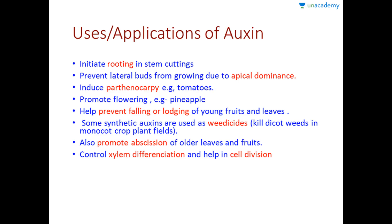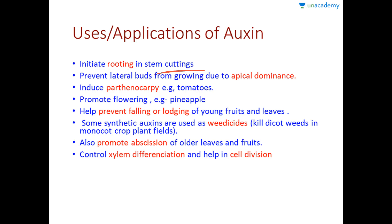The most important part is the uses and applications of auxin. First, auxin initiates rooting in stem cuttings. In horticulture and floriculture, when we want to grow plants fast, we cut the stem and put it in soil, using it as an explant to generate a whole plant. Auxin is applied to initiate rooting, especially in woody ones. The common auxins used here are NAA (naphthalene acetic acid) and IBA (indolebutyric acid).